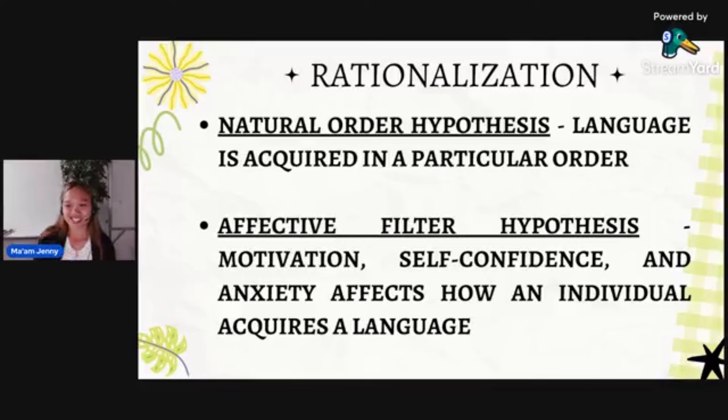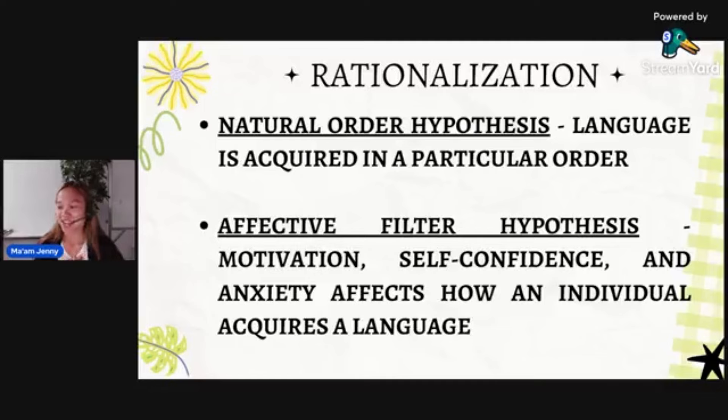Next is the affective filter. This is mostly on the inside. For example, when I was in high school, I actually memorized the Japanese alphabet — katakana and hiragana — because I had a Japanese idol. That's more of the affective filter: I was motivated to learn because of my idol.